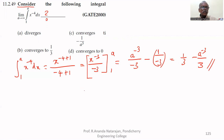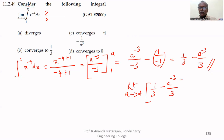If a tends to infinity, we get the limit as a tends to infinity of 1 by 3 minus a to the power minus 3 divided by 3, which equals 1 by 3 minus 0. Therefore, the answer is 1 by 3.